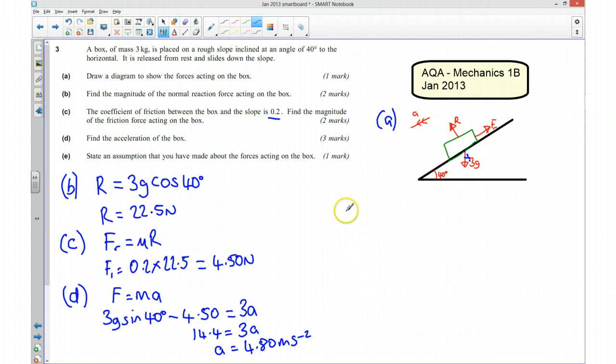Okay. Now for part E, it's asking us to state an assumption that you have made about the forces acting on the box. There's quite a few assumptions we've made. We've assumed that the friction on the plane is the same all the way through. We've assumed that there aren't any other forces acting on the box at all. And we've assumed that there's no air resistance. We only need to say one assumption, so I'm going to say no air resistance. That's an assumption that we've made. Okay. And there you go. Thank you.